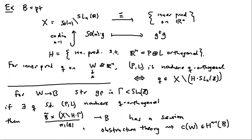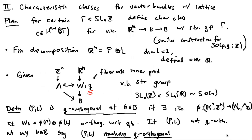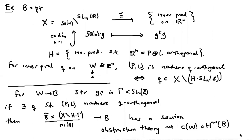To summarize: I've described the characteristic class and given an indication of what it measures. There's a similar construction for SO(p,q). What's unanswered in this discussion is: is this class non-zero? Viewed as an element in H^{n-1}(B gamma), is there some bundle where this characteristic class is non-zero? That's not at all obvious and requires extra work.